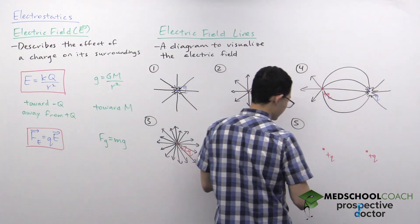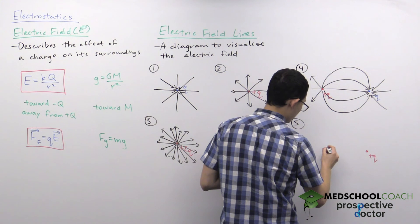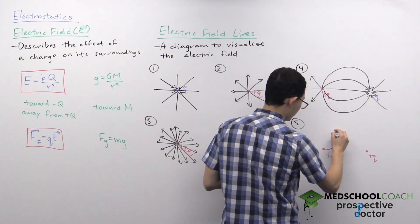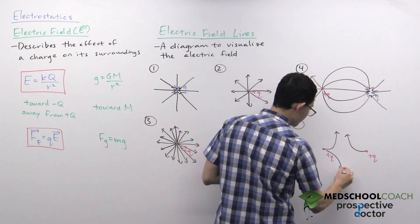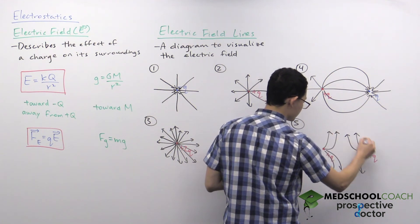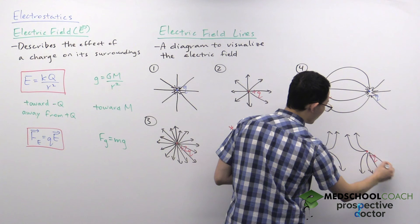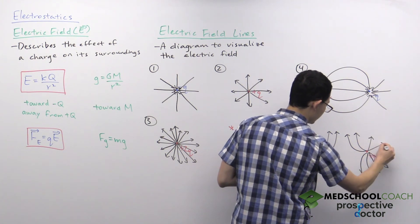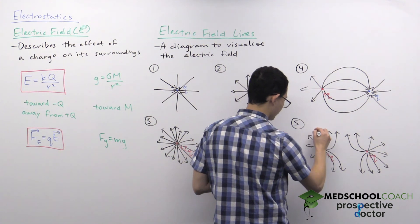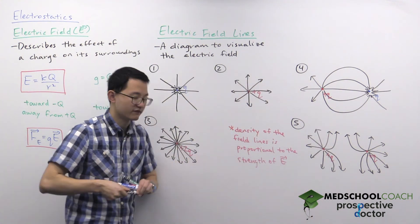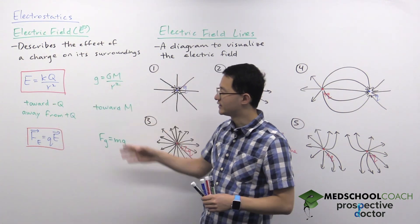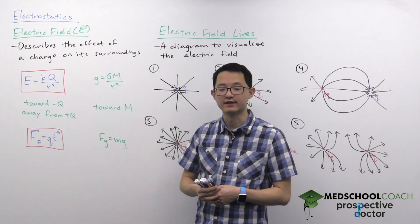If we have two positive charges, their field lines both point away and cannot point from one positive charge to the other, so the field lines curve and bend away from each other. This is essentially what electric field lines look like for different situations, and we also have the equations to calculate the magnitude of the electric field.